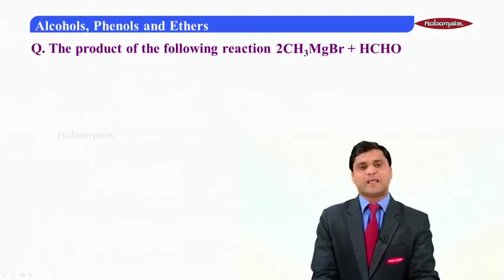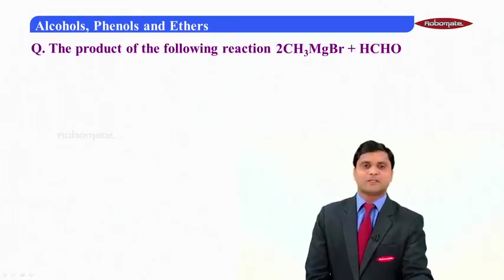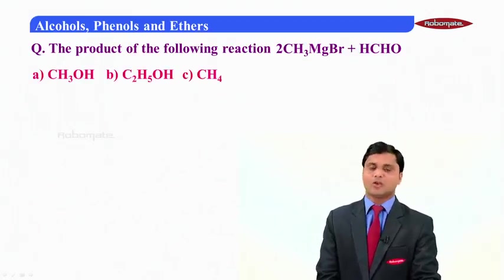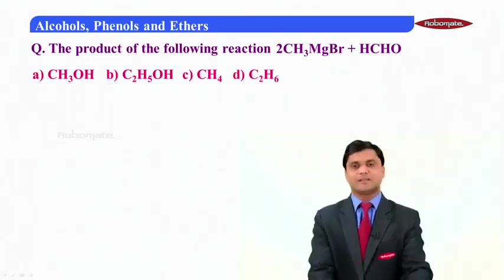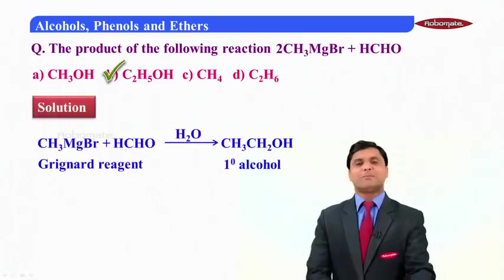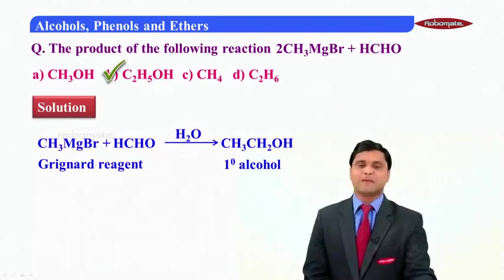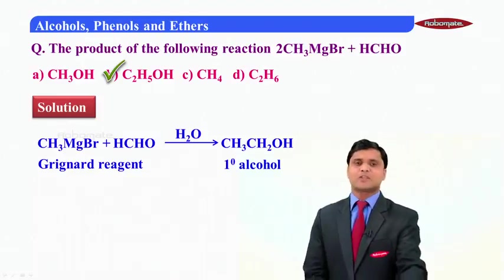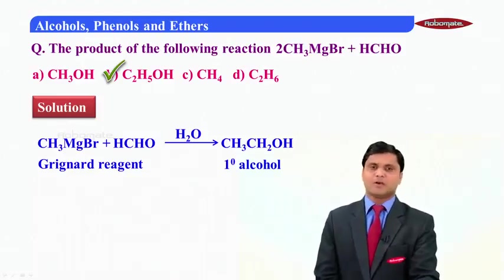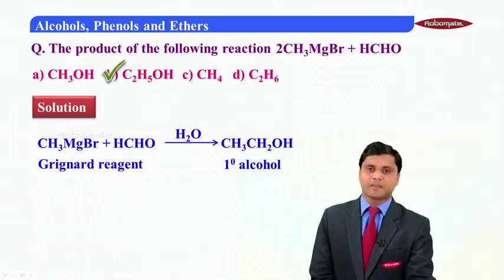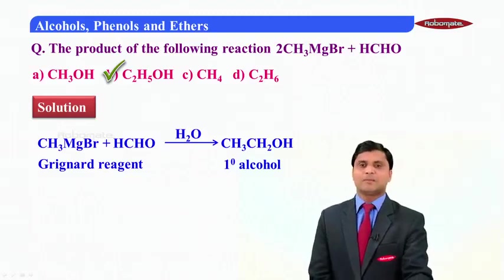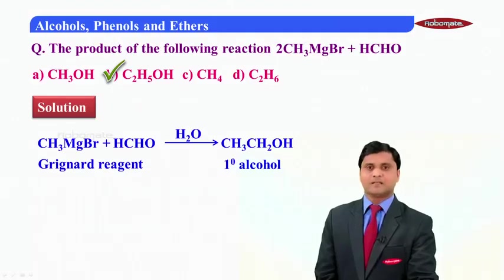Question: The product of the reaction — methylmagnesium bromide reacts with HCHO (formaldehyde) — is: option A: methyl alcohol, option B: ethyl alcohol, option C: methane. The answer is B, ethyl alcohol. Whenever formaldehyde reacts with a Grignard reagent it always gives a primary alcohol. Formaldehyde has one carbon atom and methylmagnesium bromide has one carbon atom; altogether two carbons give ethyl alcohol. Thank you.